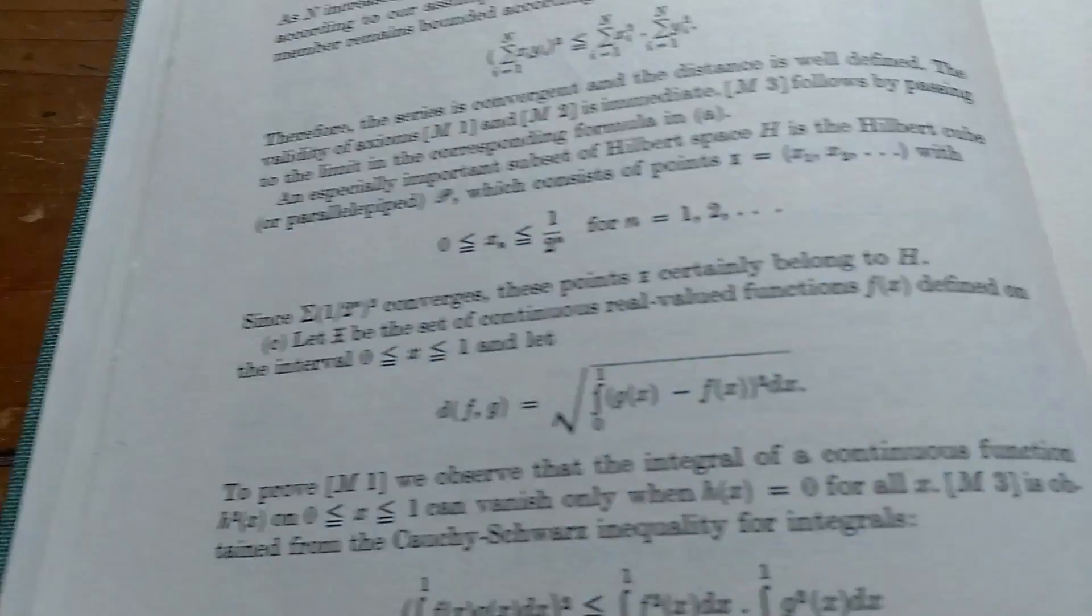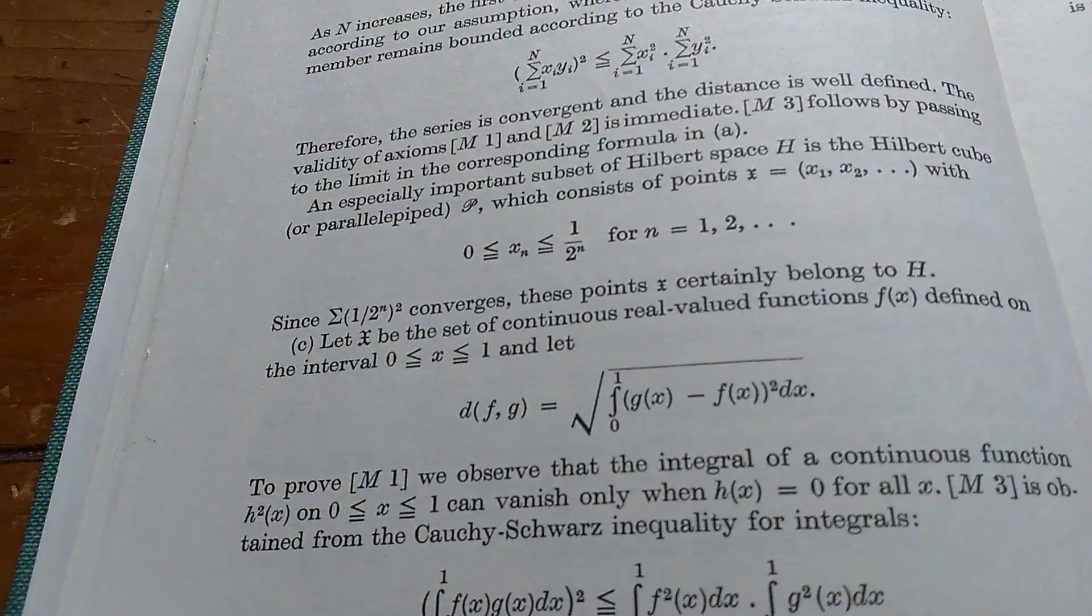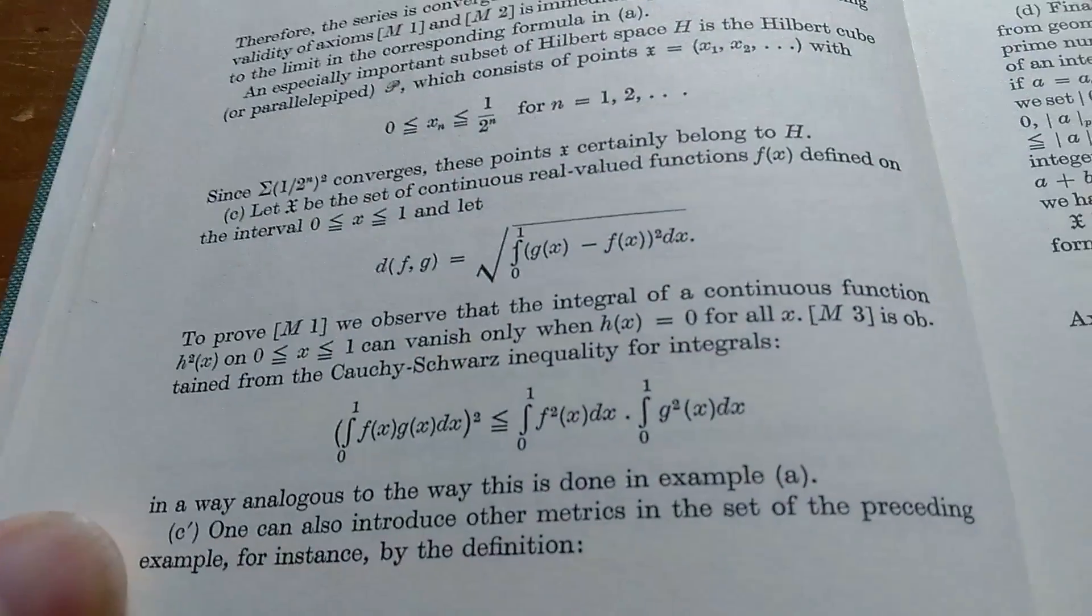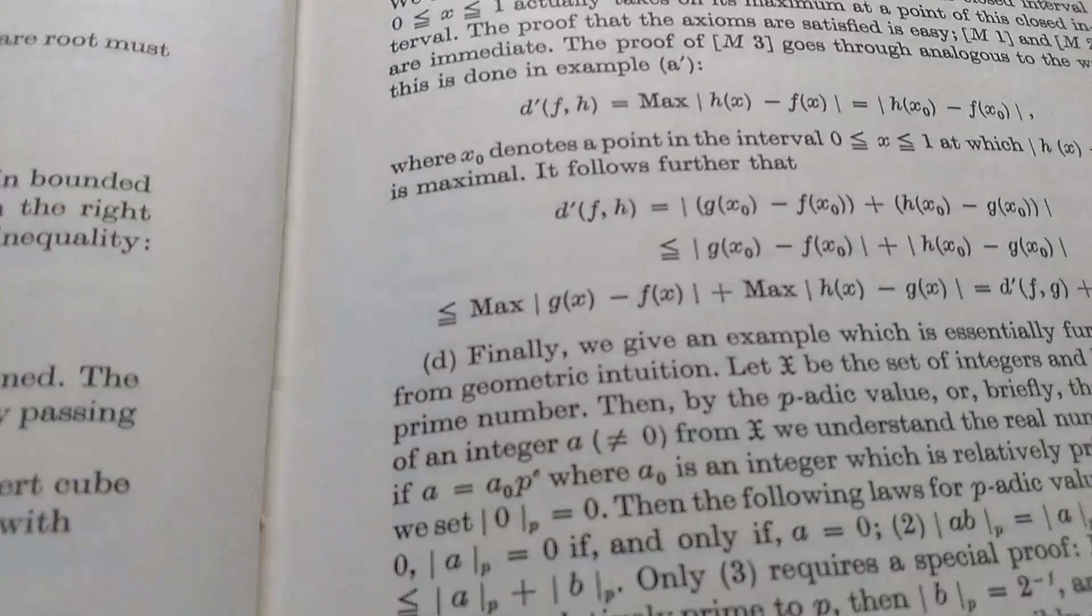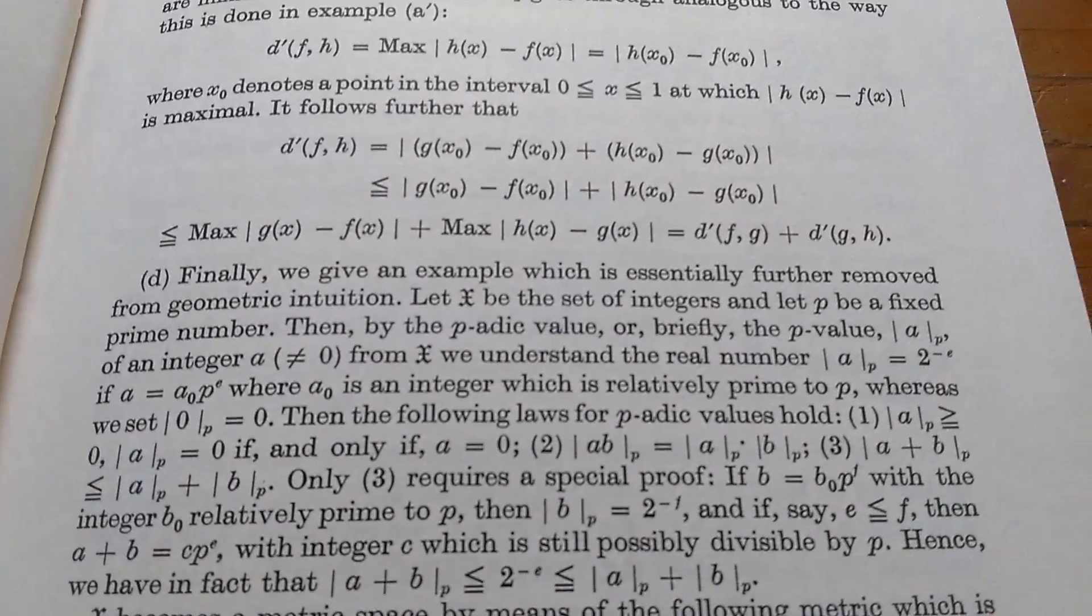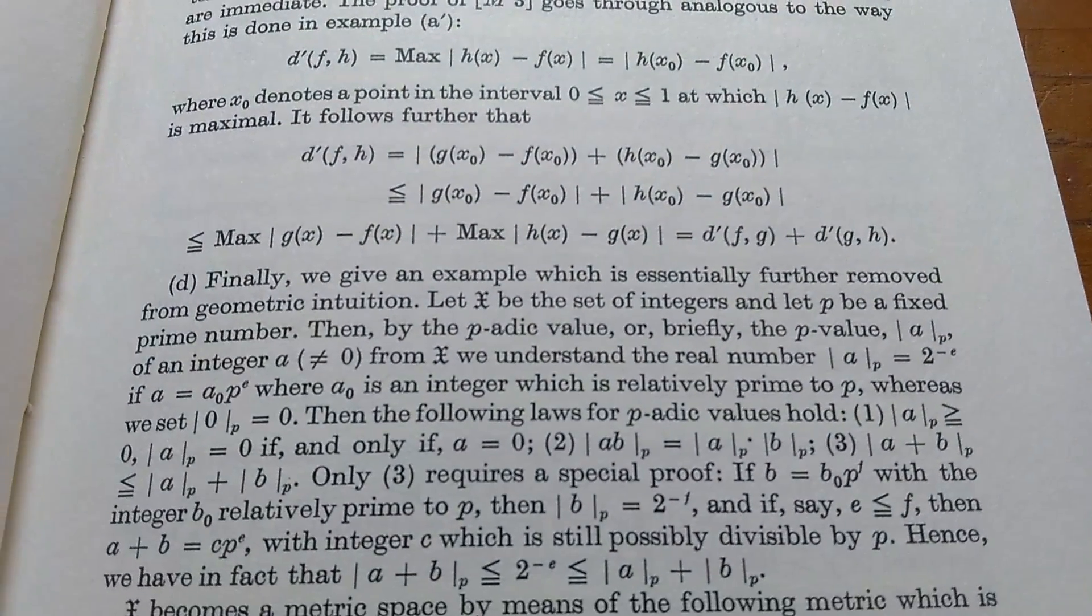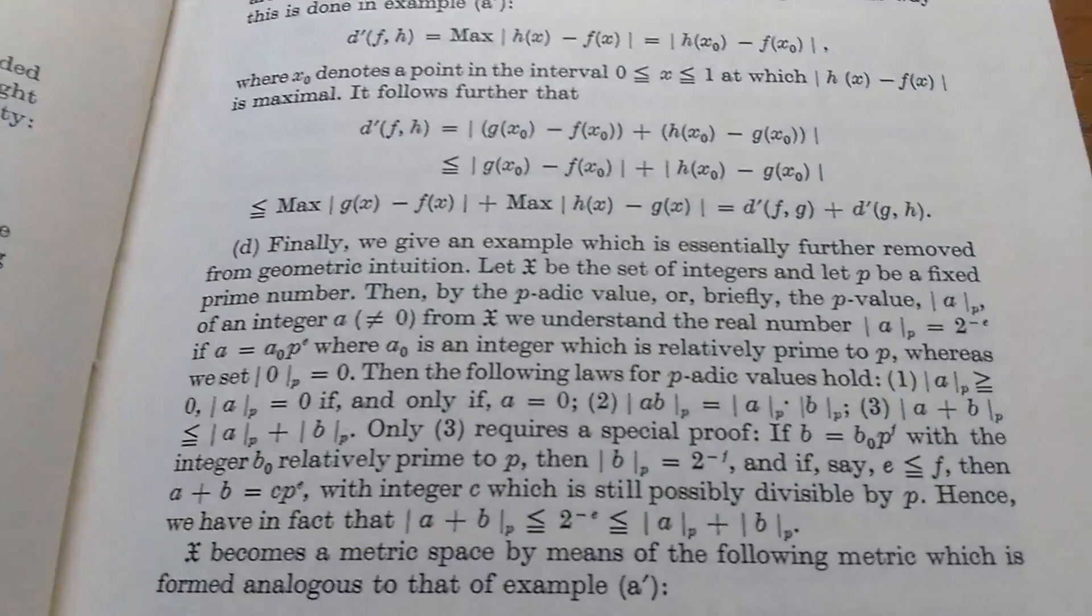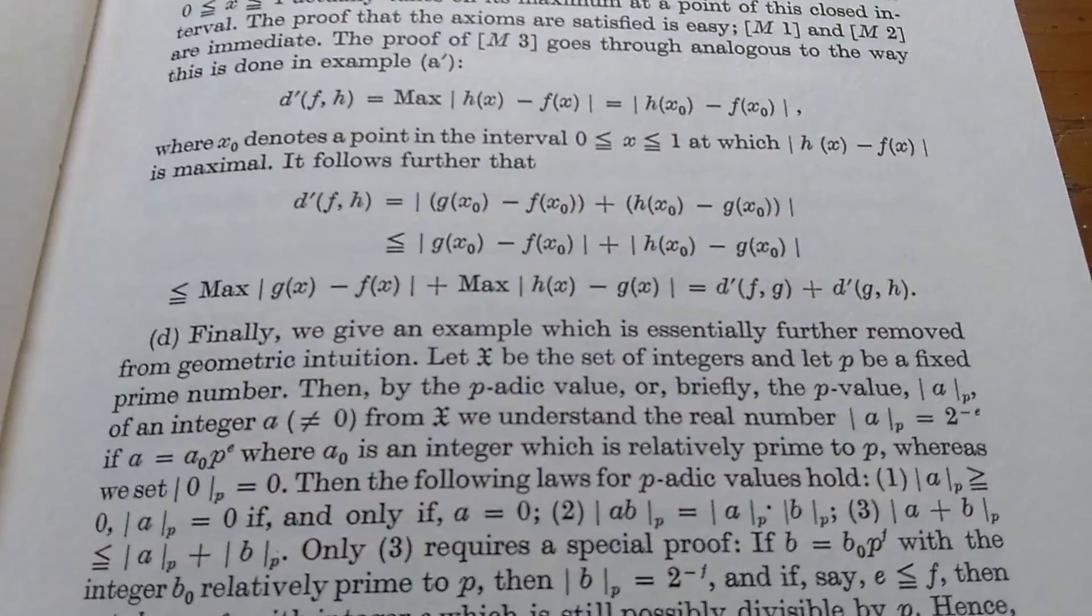I remember this example C. Let x be the set of continuous real-valued functions f(x) defined on this interval. And he defines this metric here, and you have to show it's a metric, etc. So really nice read. All kinds of examples. And then finally, D, he gives another example. Further removed from intuition, let x be the set of integers and p be a fixed prime number. He talks about the p-adic value or the p-value of an integer. So I'm pretty sure this is a little bit non-standard with respect to what you see today.